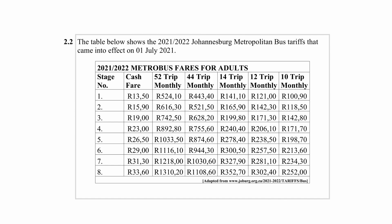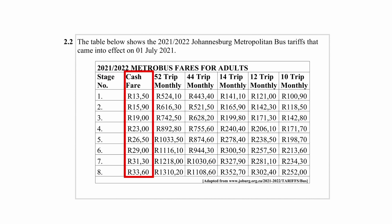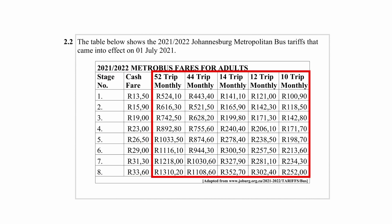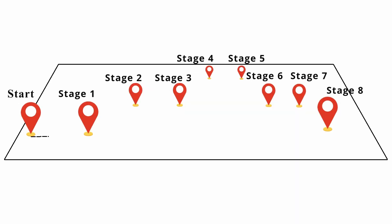You're given a bus fare tariff table that shows the stage number, cash fare to those stages, and five monthly ticket prices, each with a certain limit of trips. Here you have to think of a stage as areas along a route to a final destination.